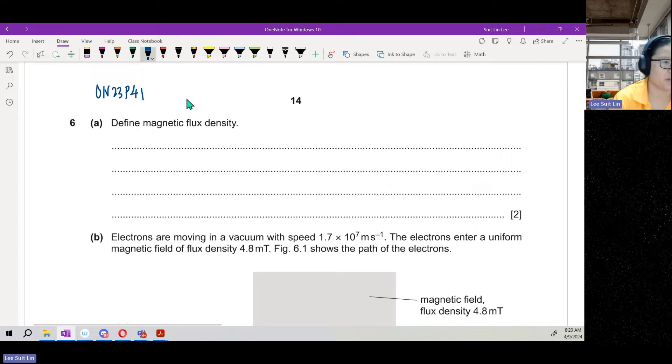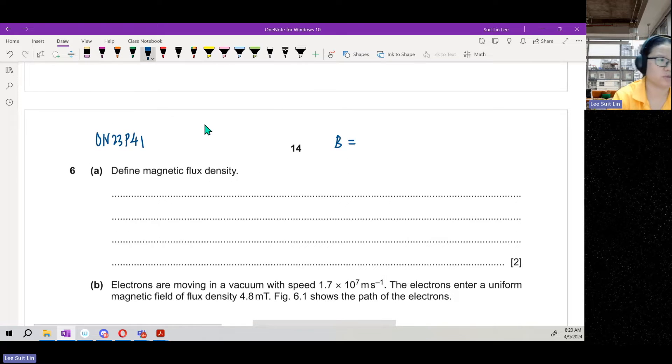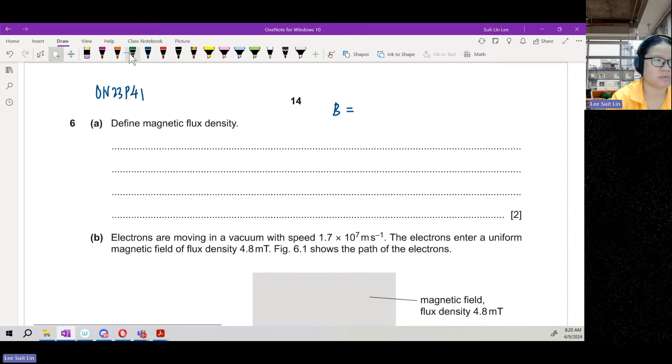You're asked to define magnetic flux density. I tend to define magnetic flux density from the equations. Every time I need to define something, if it's related to an equation, I will start from the equation. Most definitions, or at least a majority of the definitions of physics, have an equation tied to it. As you revise, you can summarize and put one side.